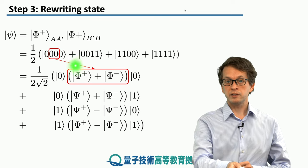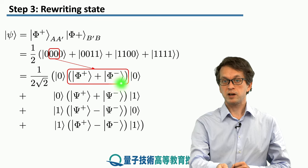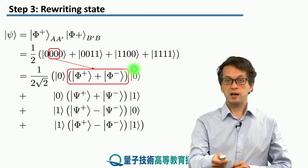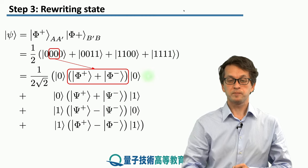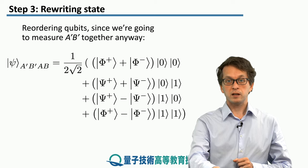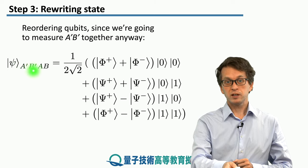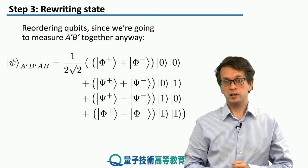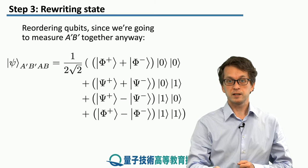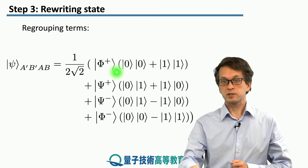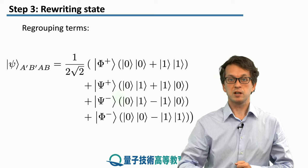We take |00⟩ and our identity tells us we can rewrite it as phi-plus + phi-minus. Similarly, |01⟩ can be rewritten as a superposition of Bell states, and so on for |10⟩ and |11⟩. We then group the qubits we are going to measure on the left and the qubits we are not going to measure on the right — just reordering qubits in our expression. Finally, we group terms according to which Bell state they are in: phi-plus times one superposition, psi-plus times another, and so on.